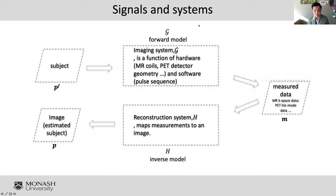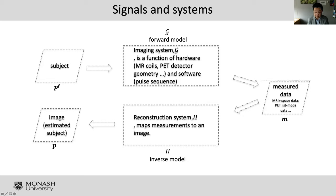Looking more closely at the signals and systems, and how we can model each element: we have a subject, let's call it PF, which is the ground truth. We have a forward model G representing the imaging system — G is a function of hardware and software. The hardware includes MRI coils and PET detectors; software in terms of MRI includes pulse sequences. Through the imaging system modeled by G, we obtain measurements M — k-space or sinogram data. The key part of today's talk is around the reconstruction system: how we design an optimal reconstruction system that maps measurements back to an image.